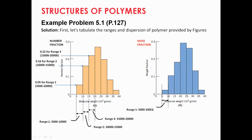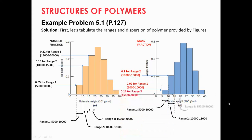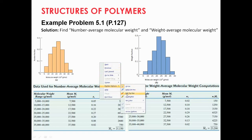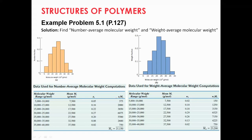We do the same steps for the weight fraction curve on the right-hand side. For the first range, we read the value 0.02; for the second range, 0.10, and so on. From these two curves we can build two tables. The first column shows the molecular weight ranges, the second column shows the mean M_i values, and the third column shows the corresponding X_i values. Make sure that the summation of all X_i values equals 1, or 100%, so you can verify that the values are correct.